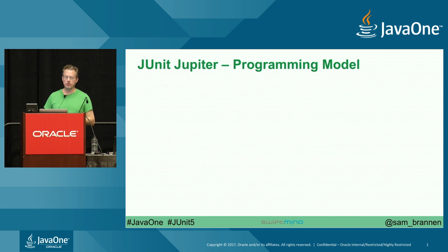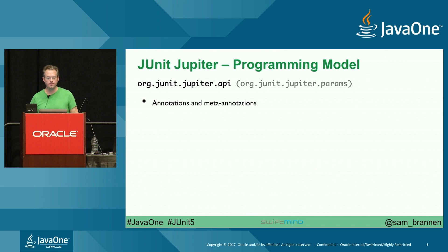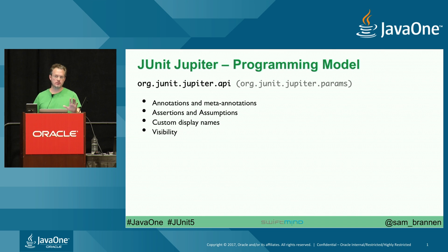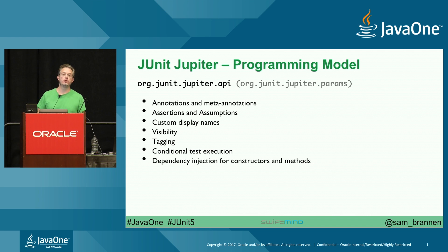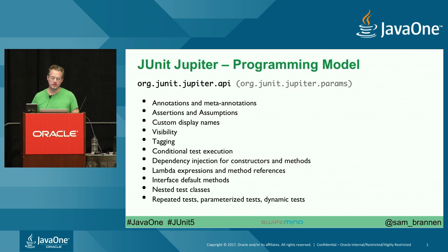The programming model is what you'll use the most. All these things are in the org.junit.jupiter.api package — don't pick the wrong test annotation from org.junit. Parameter support is in a params package, JUnit 4 migration support is in a different package. The full feature set includes: annotations and meta-annotation support, assertions and assumptions, custom display names, reduced visibility requirements — not everything has to be public — built-in tagging, conditional test execution, dependency injection for constructors and methods, lambda expressions and method references, default methods, nested test class support, repeated tests, parameterized tests, and dynamic tests.